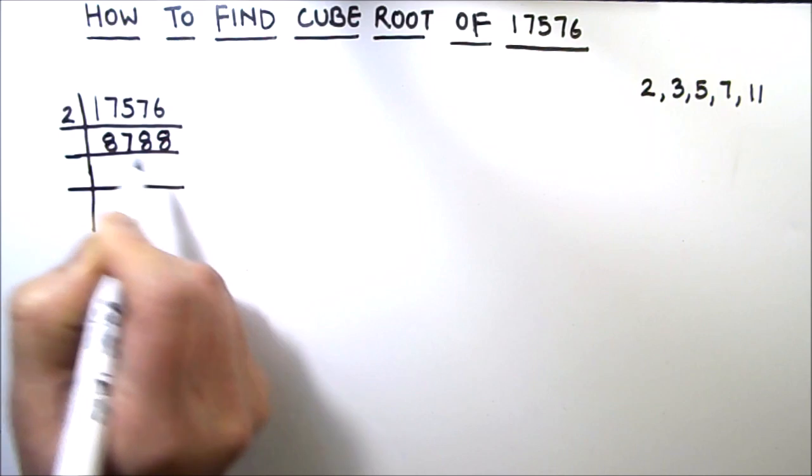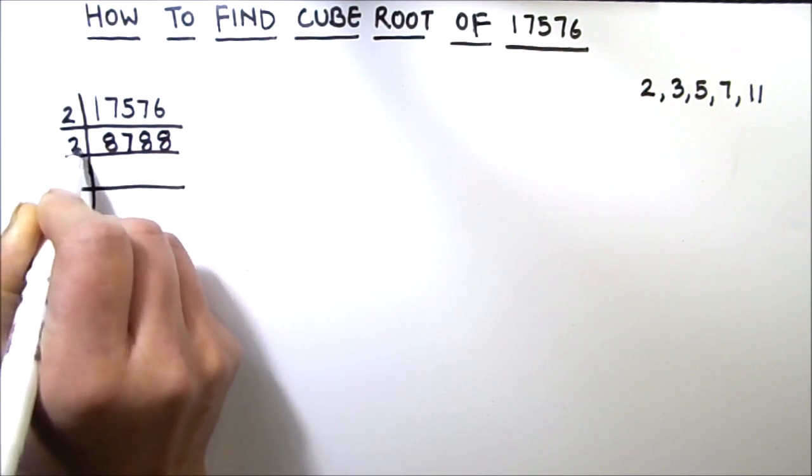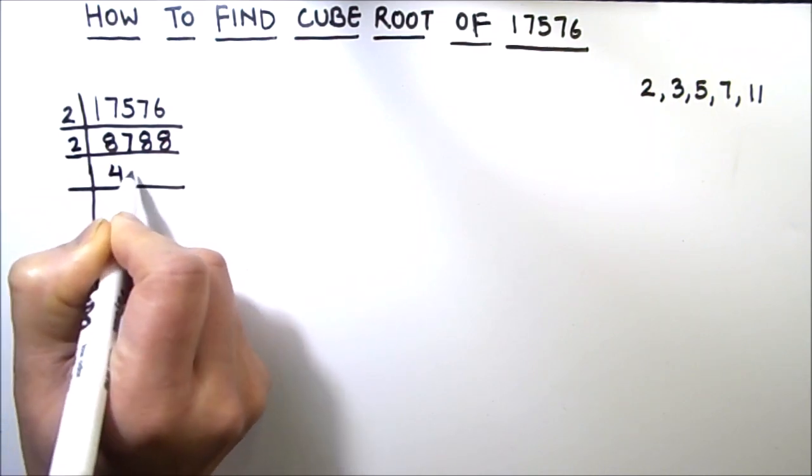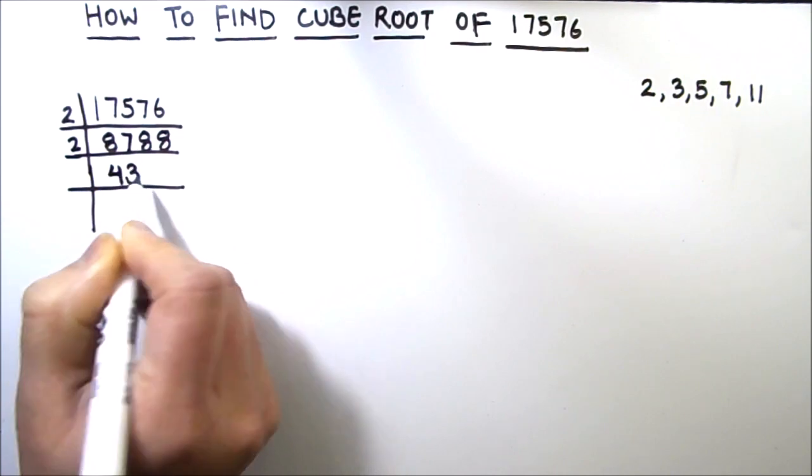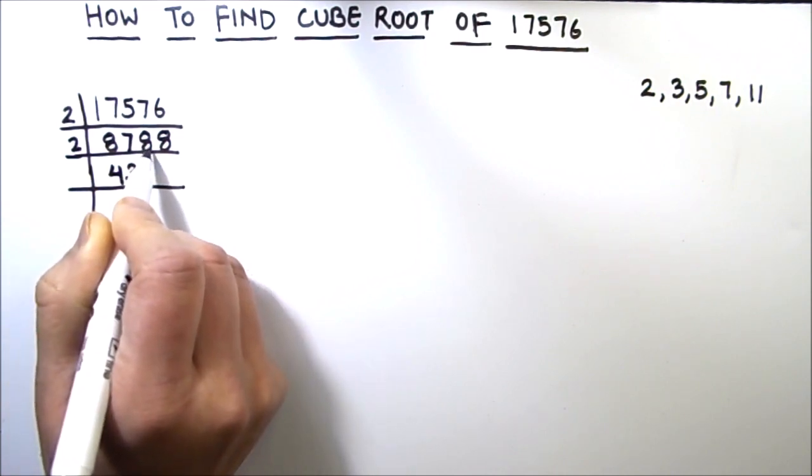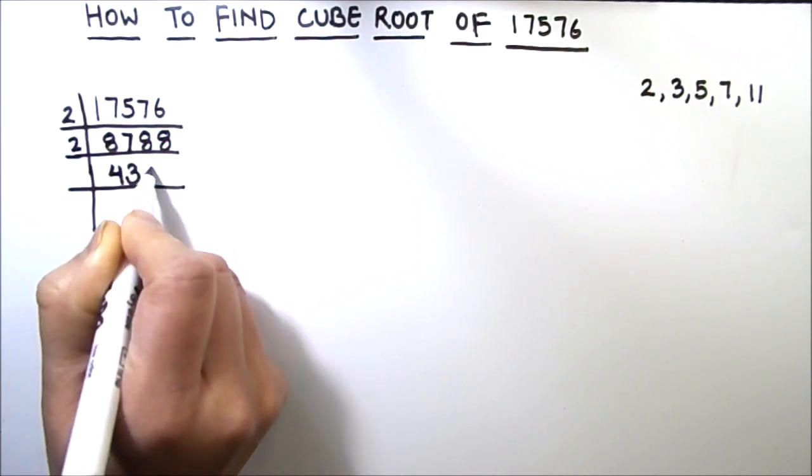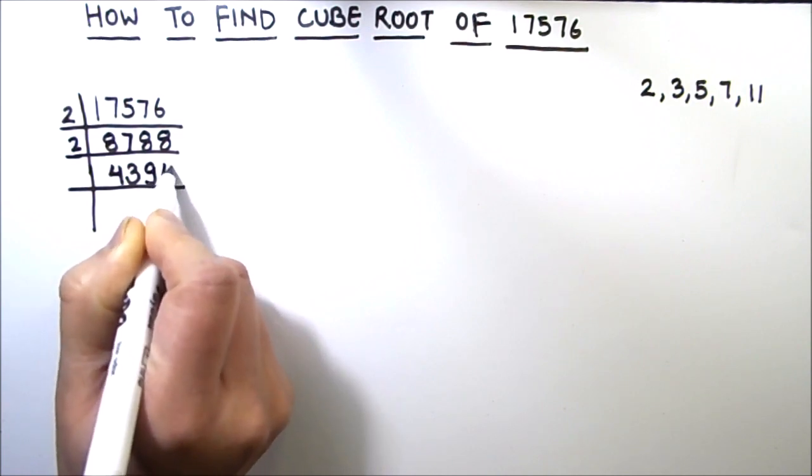Now this is even number so we can use 2 as the divisor again. So 2 times 4 is 8, 2 times 3 is 6, 1 is carried over to the next digit. So this becomes 18, 2 times 9 is 18 and 2 times 4 is 8.